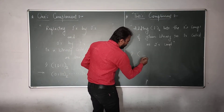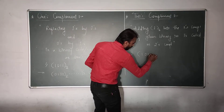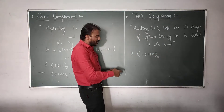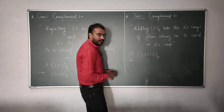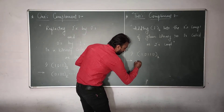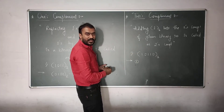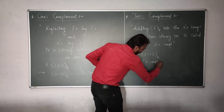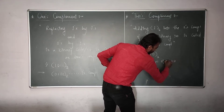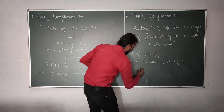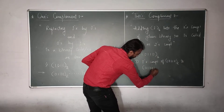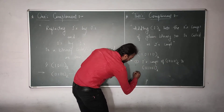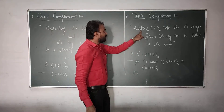Let us see an example. Suppose we need to calculate the 2's complement of the given number 1, 0, 1, 1, 0. What should we do? There are two steps. First step: convert the given number into its 1's complement. So, 1's complement of 10110 is obtained by replacing 1's by 0's and 0's by 1's.